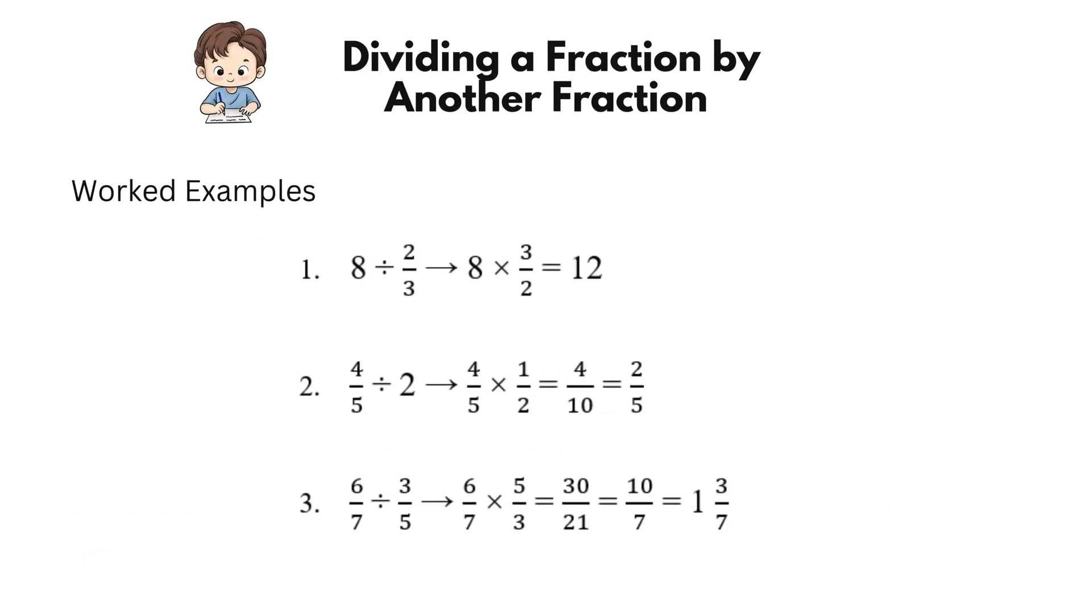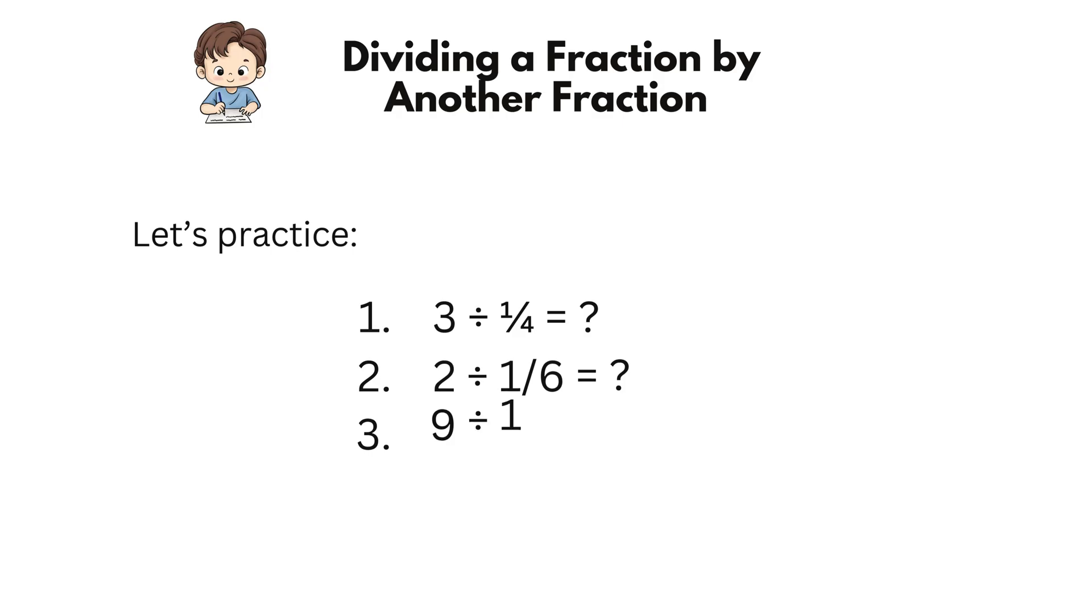Worked examples: 8 divided by 2 thirds, 8 times 3 halves equals 12. 4 fifths divide 2, 4 fifths times 1 half equals 2 fifths. 6 sevenths divided by 3 fifths, 6 sevenths times 5 thirds equals 30 twenty-firsts equals 10 sevenths equals 1 and 3 sevenths. Let's practice. 3 divided by 1 quarter equals, 2 divided by 1 sixth equals, 9 divided by 1 and a half equals. Who can solve?